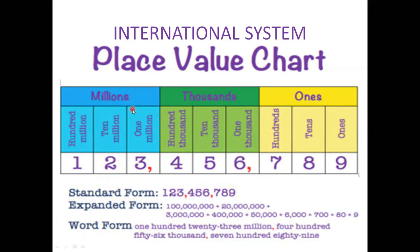For a nine-digit number in the international place value system, we have three periods: millions, thousands, and ones. We use commas to differentiate the periods. For example, the number 123,456,789 is read as one hundred twenty-three million four hundred fifty-six thousand seven hundred eighty-nine. You should now be able to differentiate the Indian and international place value systems.